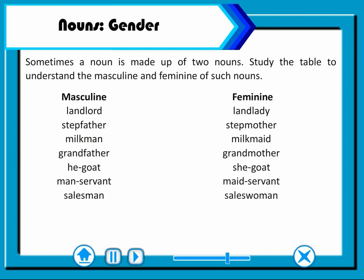Sometimes a noun is made up of two nouns. Study the table to understand the masculine and feminine of such nouns. Masculine — Feminine: Landlord — Landlady, Stepfather — Stepmother, Milkman — Milkmaid, Grandfather — Grandmother, He-goat — She-goat, Manservant — Maidservant, Salesman — Saleswoman.